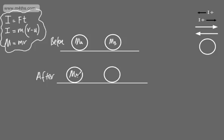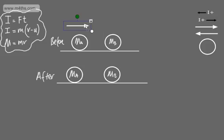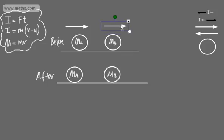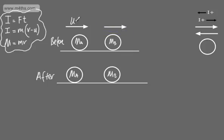So we've got MA and MB. If we put an initial velocity on each of these, we could say that we've got UA and UB — those are the initial velocities of A and B respectively.